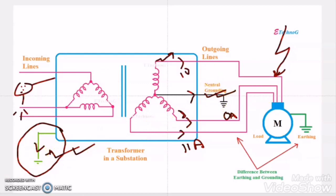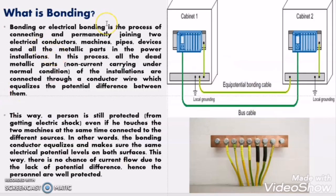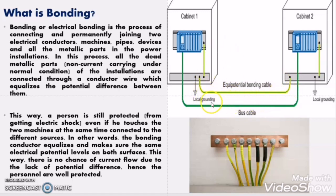Now let us move to the third part of our video — what is bonding? Bonding is nothing but connecting the dead part of one equipment or machine to the dead part of another machine or equipment. So when you have two machines — say cabinet 1 and cabinet 2 — and you connect the dead part of one cabinet to the dead part of the other through a wire, then it is called bonding. The cable connecting the dead parts of two or more equipment is called an equipotential bonding conductor or equipotential bonding cable.